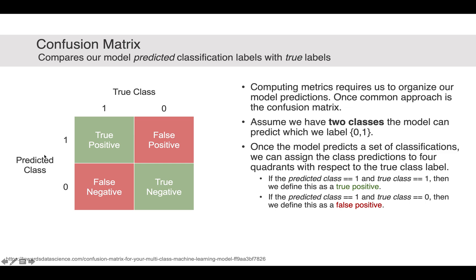If our model predicts a class of one and the data is actually labeled one, then we call that a true positive. If our model predicts a one but the data is actually zero, that's a false positive. If our model predicts a zero and the true label is one, that's a false negative. And if our model predicts a zero and the true label is zero, that's a true negative.